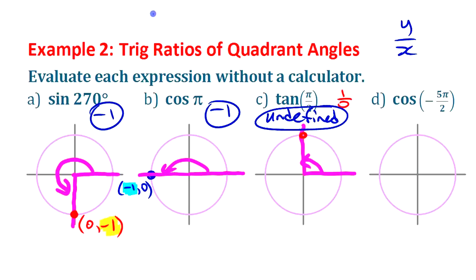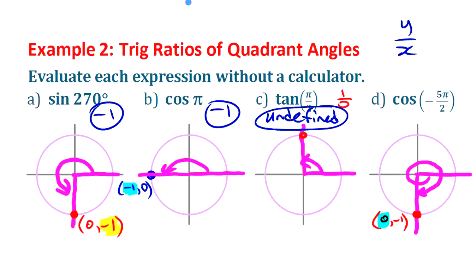For cosine of negative 5π over 2: it starts there and goes once around, ending right there on the bottom. So the coordinates of that terminal arm point are (0, −1), and we're looking for the cosine — the x coordinate — which is 0. That's using the unit circle approach to find the sine and cosine of quadrant angles without touching your calculator.